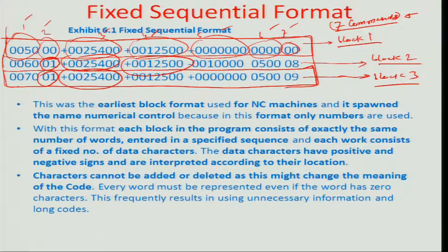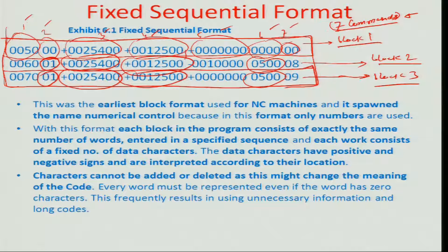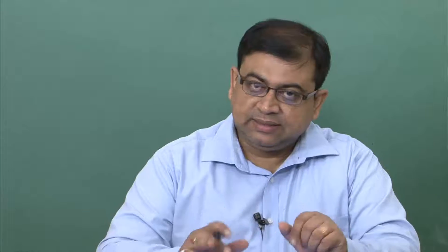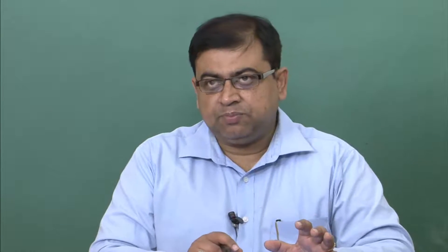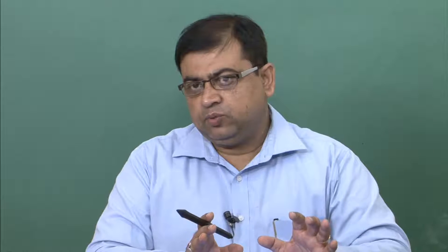The numbers 00125001250 are also repeating every time, and similarly the number 500 is repeating every time. In a manual punching system, a programmer has to input each command again in the next line without taking it from the last line — typing again and again. This is definitely time-consuming and not a productive way of doing the programming.